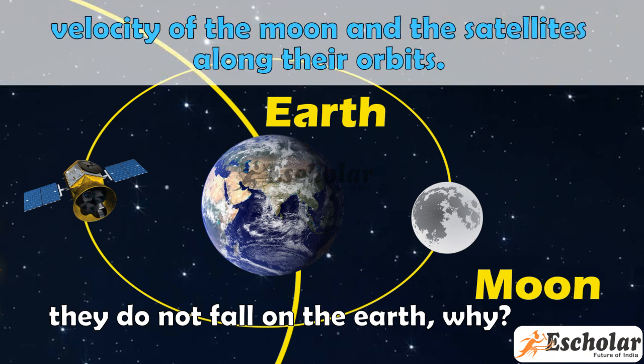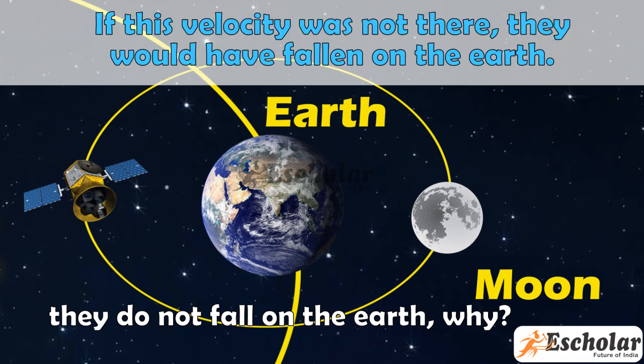This is because of the velocity of the moon and the satellites along their orbits. If this velocity was not there, they would have fallen on the earth.